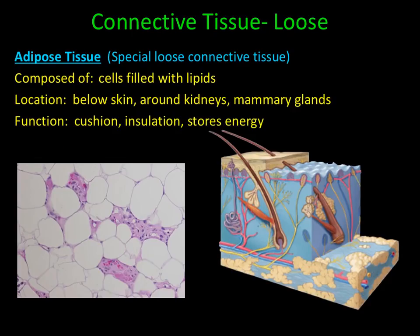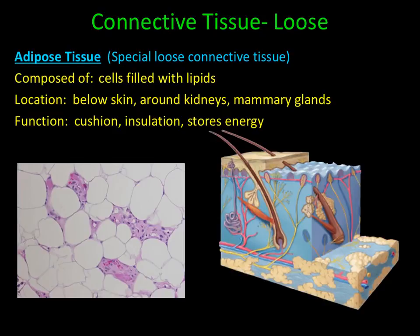A special type of loose areolar connective tissue is adipose tissue. Adipose tissue consists of cells filled with lipid or fat. You can find adipose tissue below the skin, around the kidneys, or within the mammary glands. The primary function of adipose tissue is to serve as a cushion, as insulation, and to store energy.